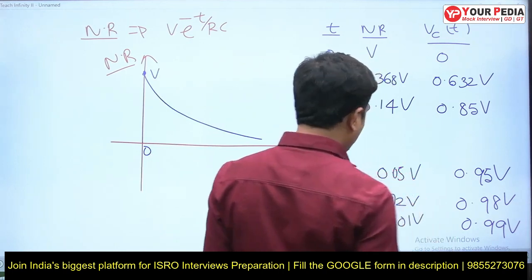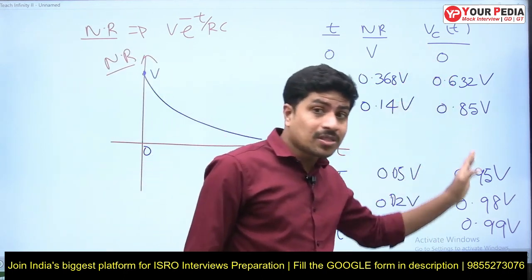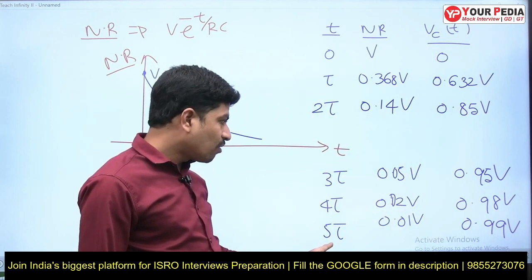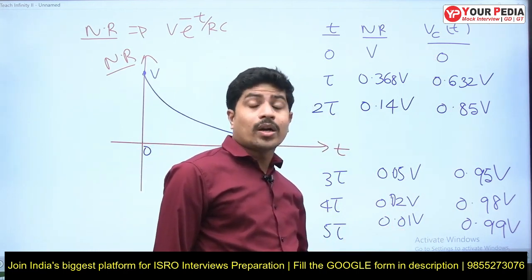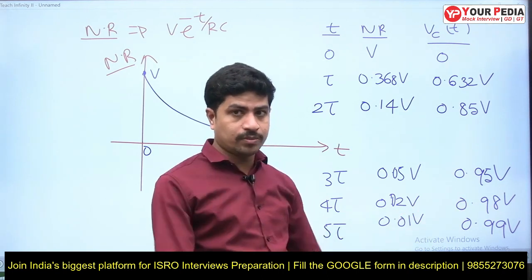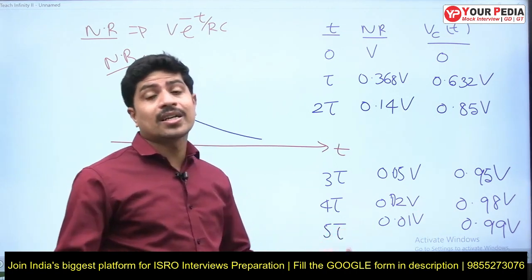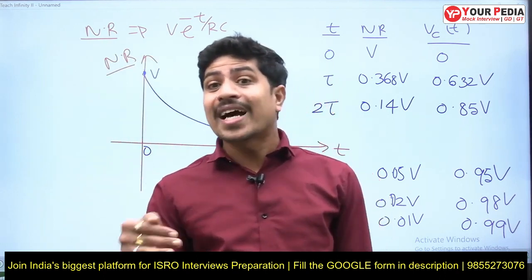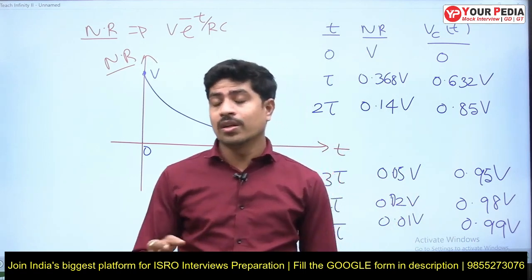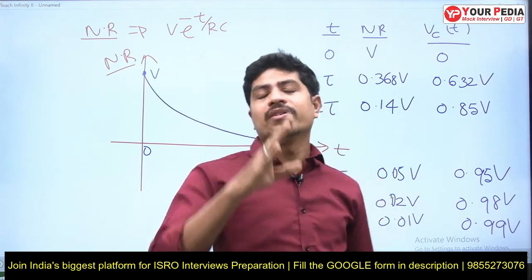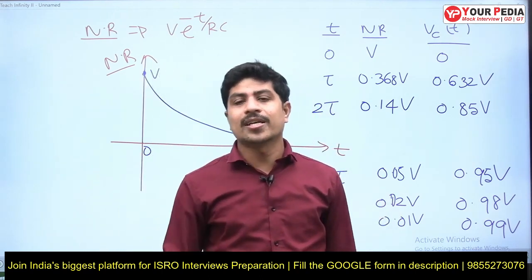After 5τ, the natural response is almost zero. The transient response is the total response — both natural and forced — up to this period (5τ). The response of the system during the transient period is called the transient response. Don't misunderstand that natural response and transient response are the same — there is a lot of difference. I think by now you have a clear idea of the difference between natural response and transient response. Thank you.